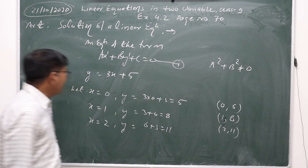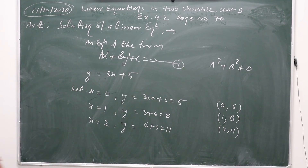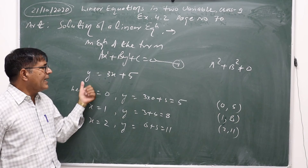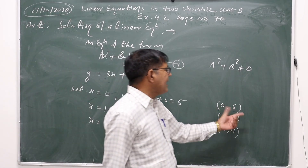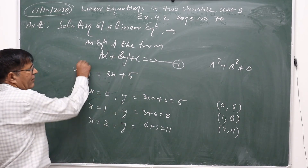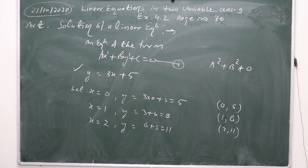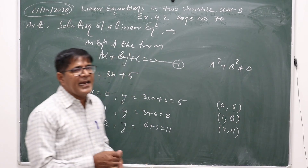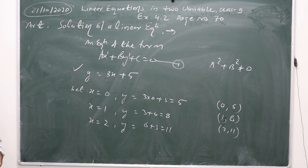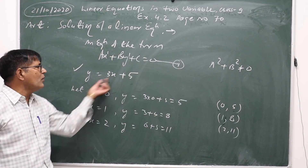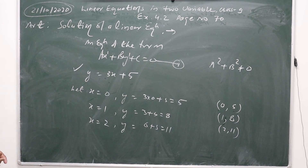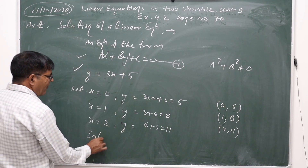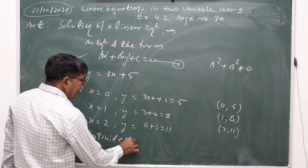In this way, if we take different values of x, then for every different value of x there will be a corresponding value of y. These values of x and y form the solution of the given linear equation. So when we have one linear equation, it has infinitely many solutions.